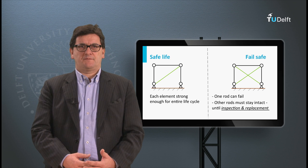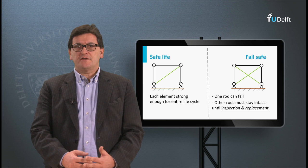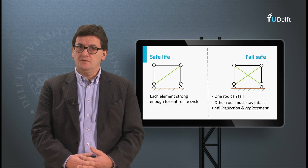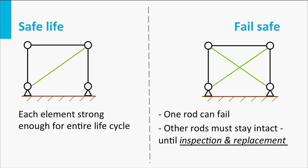Let's compare the two concepts. A truss with one diagonal bar and a truss with two diagonal bars. The concept with one diagonal bar has just enough bars to carry the loads. If we remove one bar, the truss will collapse. During the service life of this truss, we cannot afford any failure, so the bars should be strong enough to last till the end.